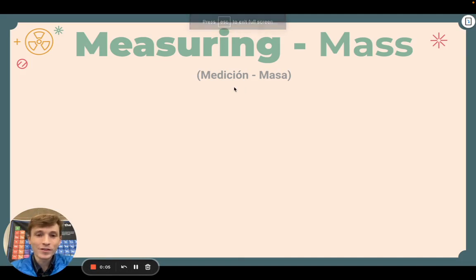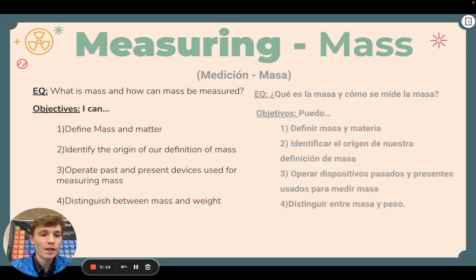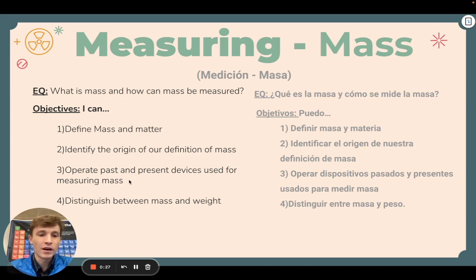In this module we are going to be talking about measuring mass and taking a close look at the essential question of what is mass and how can we measure mass. Throughout this unit we're going to be defining and distinguishing between mass, matter, and weight. We'll be identifying the origin of our definition of mass — how did we come up with the one kilogram — and you'll have the opportunity to operate past and present devices used for measuring mass.